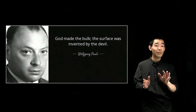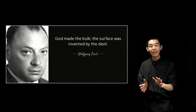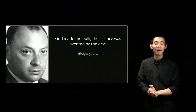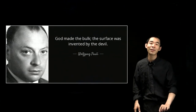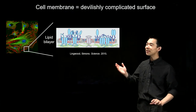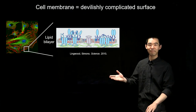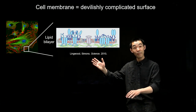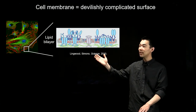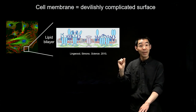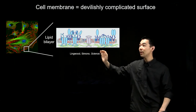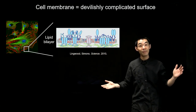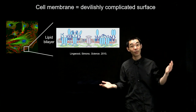So let me give you an example of a devilishly complicated surface that my lab has been trying to understand: the cell membrane. If we zoom into the interface — the boundary of a single cell — we find a barrier that separates the inside of the cell from the outside environment, the external world.